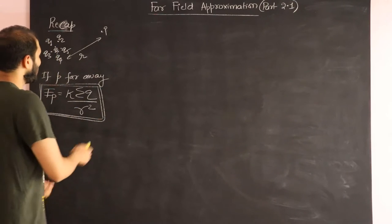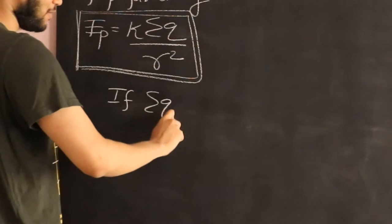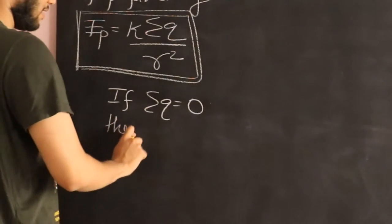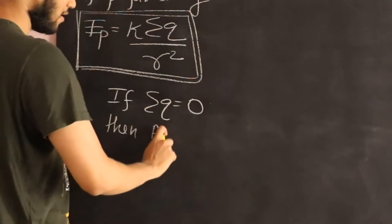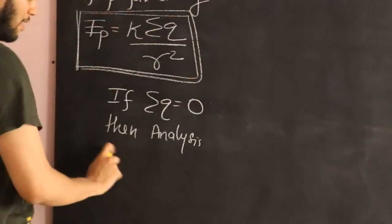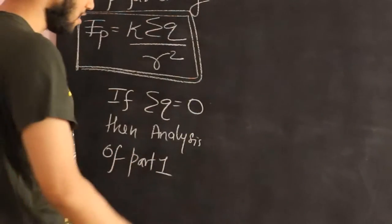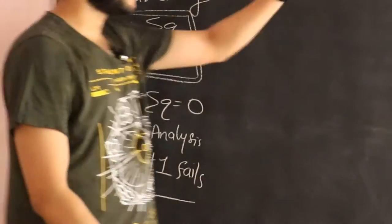So if I write that over here, if sigma Q becomes zero, then whatever we studied in part one of this particular video session fails. And that's where this part comes in.